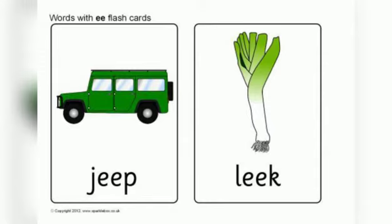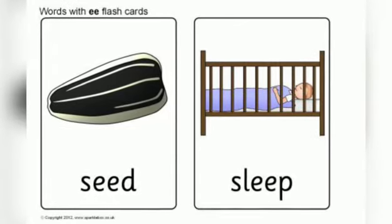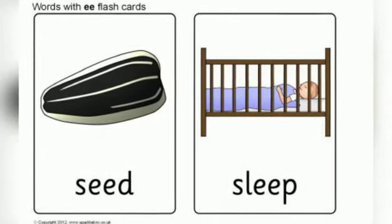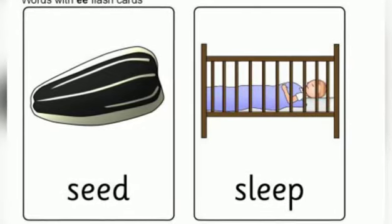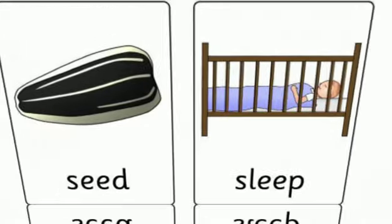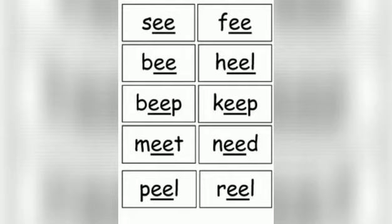L, E, A, K — leak. S, E, E, D — seed. S, L, E, E, P — sleep. Seed. Sleep. E, E, L — eel. Sheep. Bee and feet.